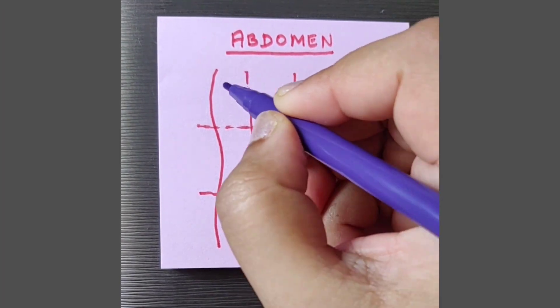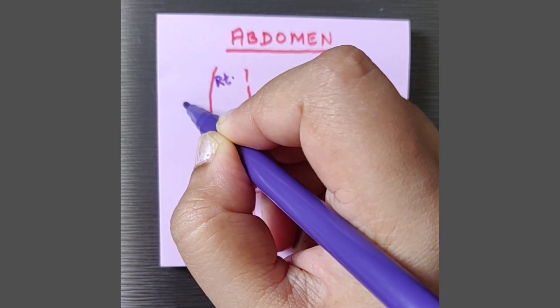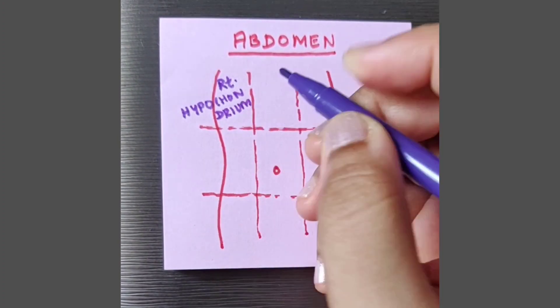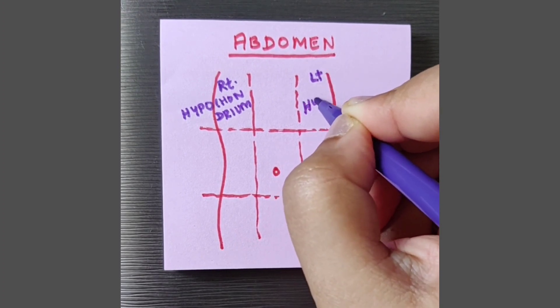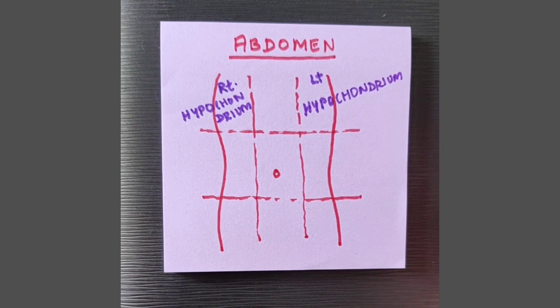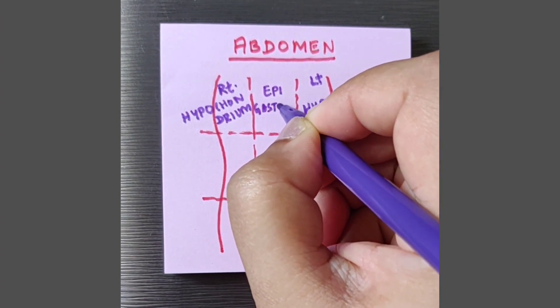So first I'm going to mark the right hypochondrium. Hypo means below. Chondro is the adjective used for describing the ribs. So we have the right and the left hypochondrium just below the rib cage. And then we have the epigastrium here which means just above the stomach.